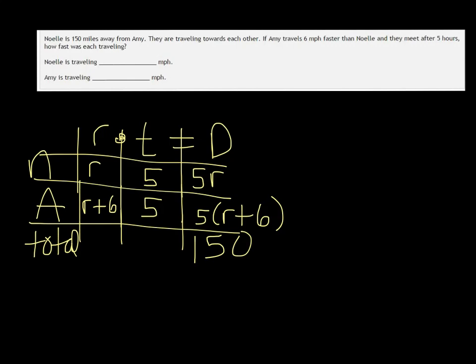And that's enough to give us an equation. This last column right here, we would write 5R plus 5R plus 30, I did the distributing there, equals 150.